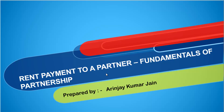In this video, we look at what happens when a particular partner gives his own premises on rent for the purpose of the business of the partnership and is paid a rent — how is that to be reflected in the profit and loss appropriation account?